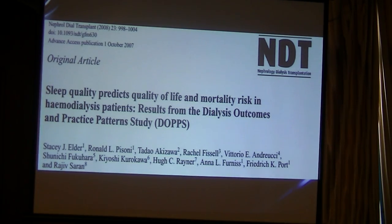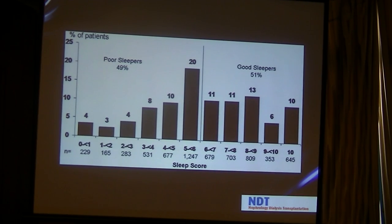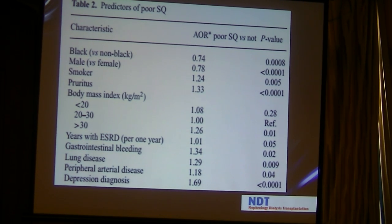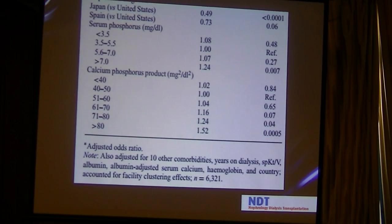A large study — the largest, involving more than 16,000 patients — assessed sleep quality as a predictor of quality of life and mortality risk in hemodialysis patients. About 49% were poor sleepers and 51% were good sleepers. Predictors of poor sleep quality included being Black, male, a smoker, having polymorphism, being on dialysis more than 30 years, gastrointestinal disease, lung disease, elevated phosphate above 7, and calcium-phosphorus product above 80.